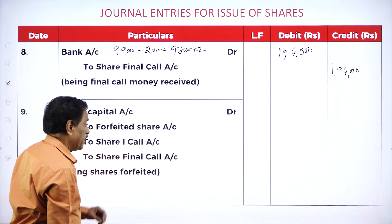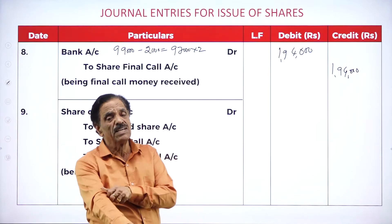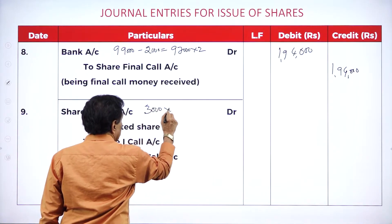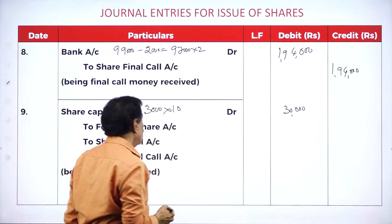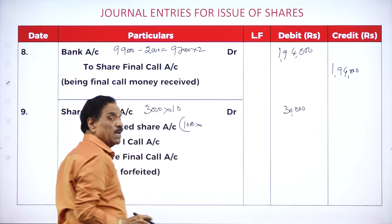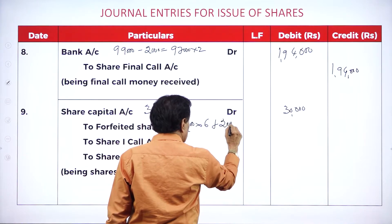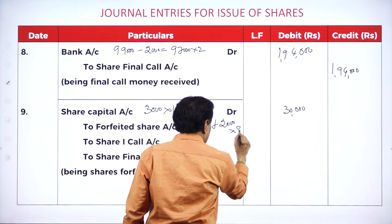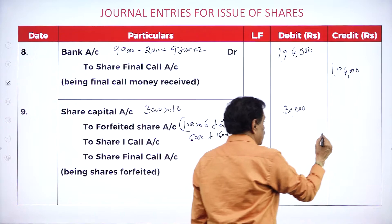Now we will go for the forfeiture entry. Both the 1,000 share man and 2,000 share man — how many shares have been forfeited? 3,000 shares. Entry: share capital account debit 3,000 into 10 = 30,000 to be received. How much already paid? First man holds 1,000 shares — paid application 3, allotment 3 = 1,000 into 6 = 6,000. Second man holds 2,000 shares — paid application, allotment, first call = 8 rupees = 16,000. Totally received: 22,000.